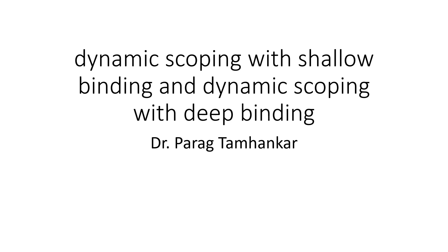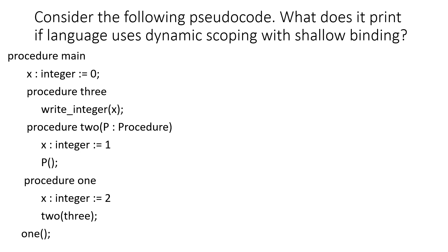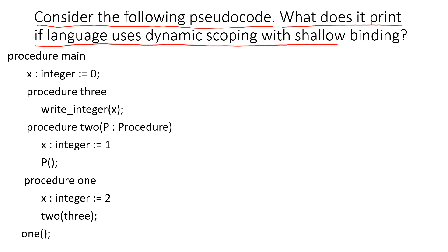In this video we will study dynamic scoping with shallow binding and dynamic scoping with deep binding. Consider the following pseudo code — this is the code given to us. We want to know what this program prints if the language uses dynamic scoping with shallow binding. When solving questions of this nature, we tend to create referencing environments.